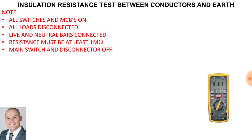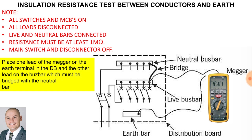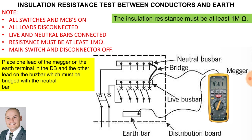To perform an insulation resistance test between conductors and earth: all switches and miniature circuit breakers are on, all loads are disconnected, the live and neutral bars are connected, resistance must be at least one mega ohm, and the main switch and disconnector is switched off. Place one lead of the megger on the earth terminal in the distribution box and the other lead on the bus bar, which must be bridged with the neutral bar. The reading should be at least one mega ohm.